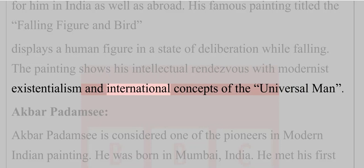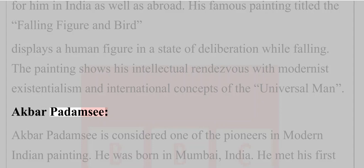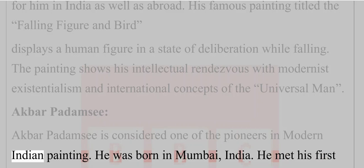His famous painting titled 'The Falling Figure and Bull' displays a human figure in a state of deliberation while falling. The painting shows his intellectual rendezvous with modernist existentialism and international concepts of the universal man.